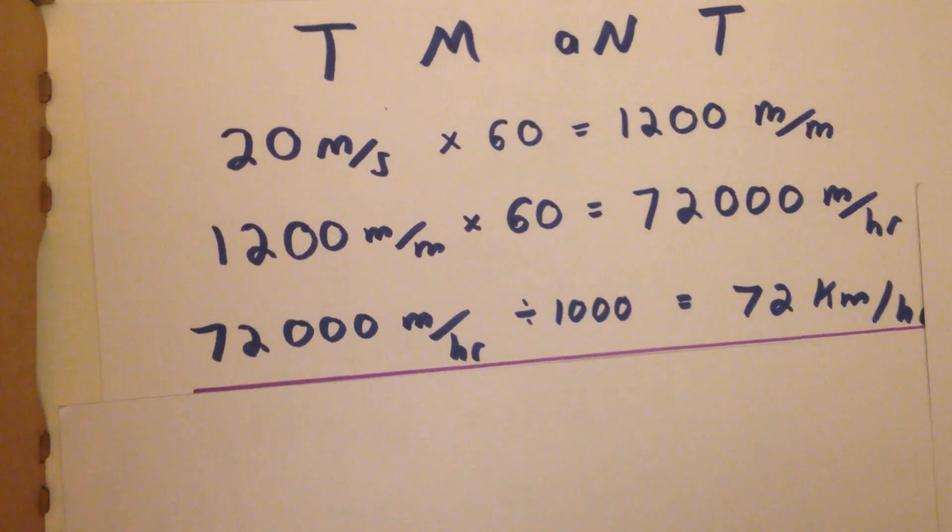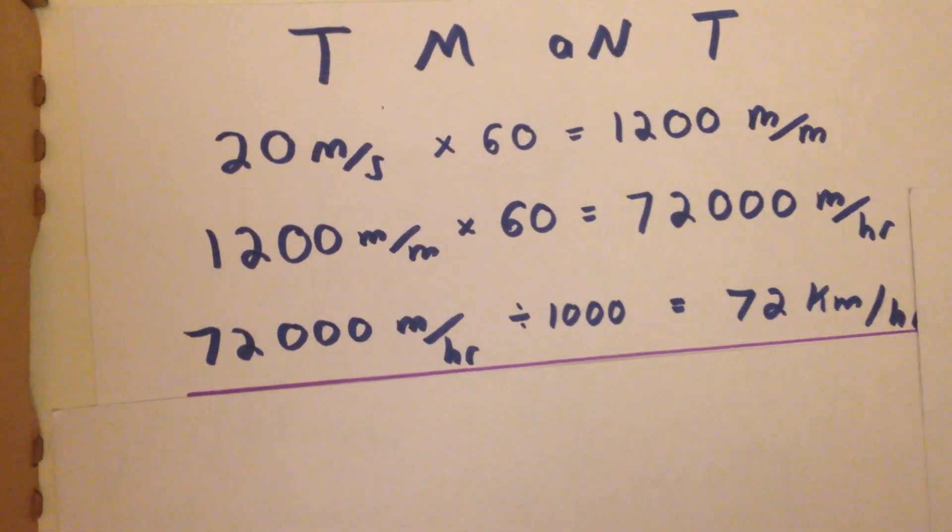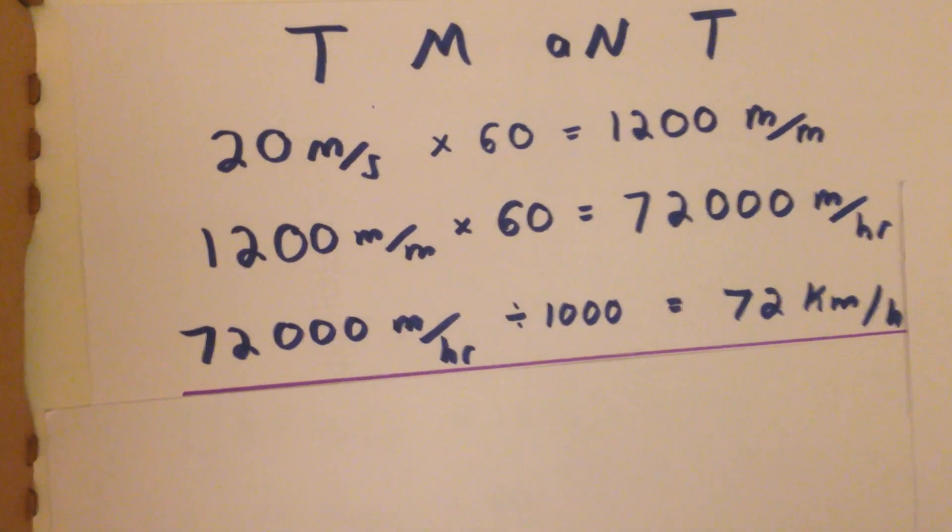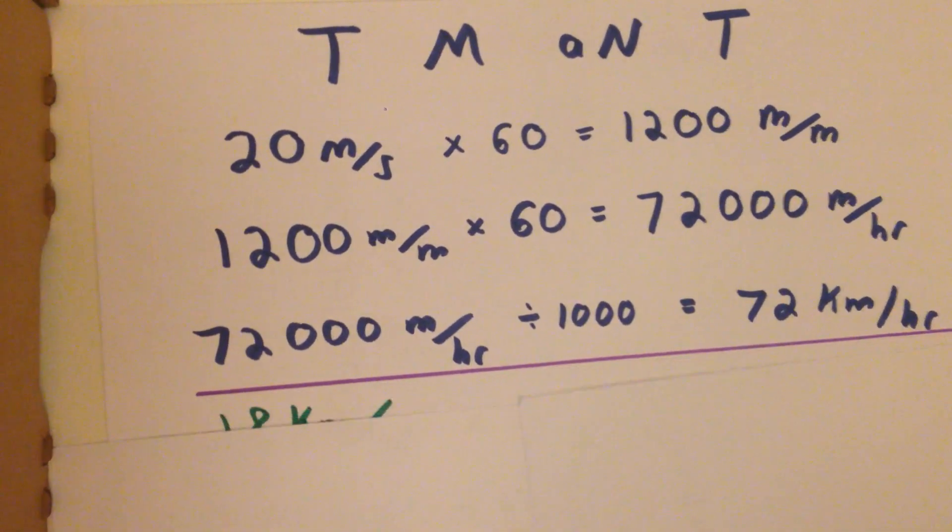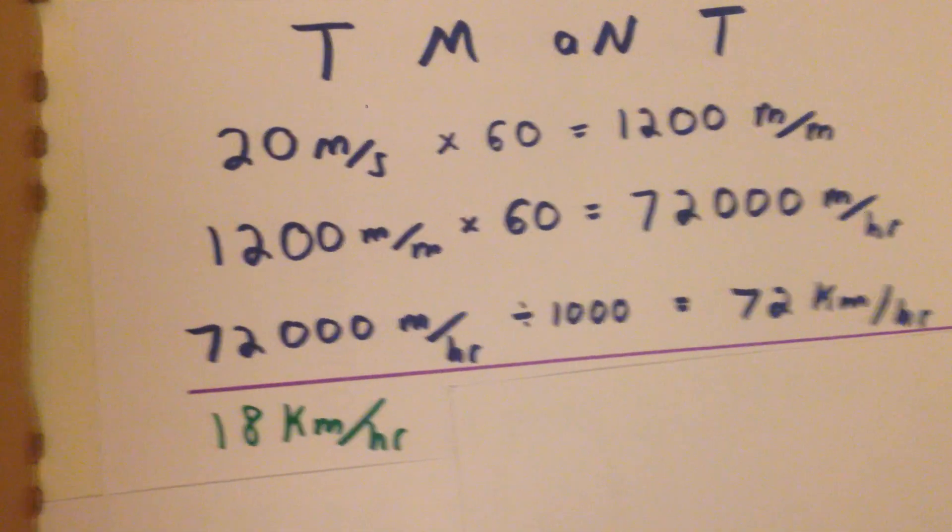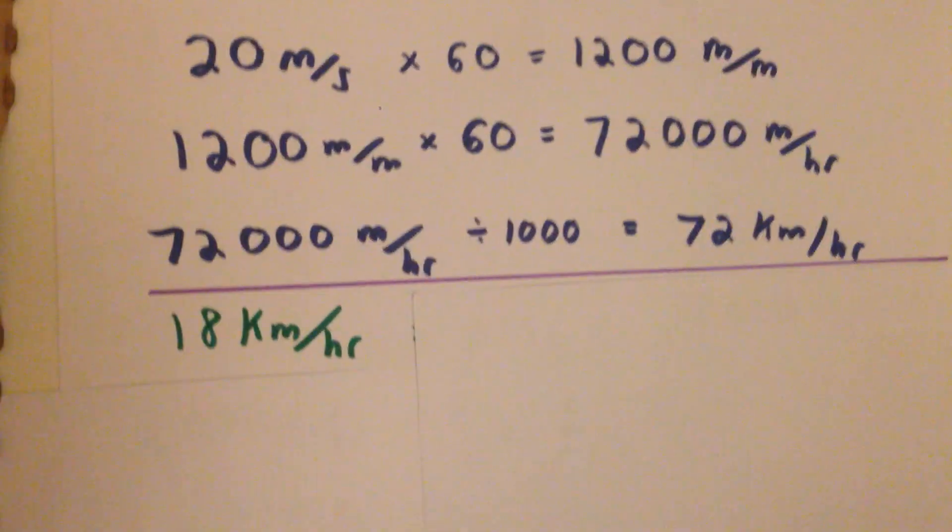That is the speed of a jackrabbit, a greyhound, or as you saw there, a wild coyote. Now, to go in reverse. Maths is very logical, so we're just going to do everything the opposite way now.